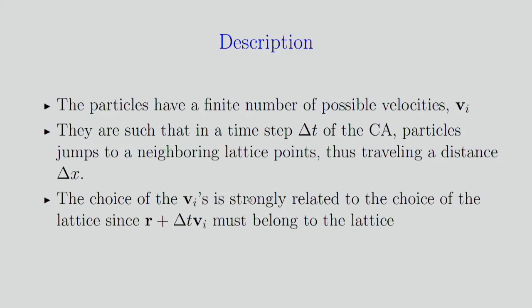There's a clear link between the choice of the velocity that you allow in your model and the lattice topology, because you need that your current position plus your jump is still a lattice point.